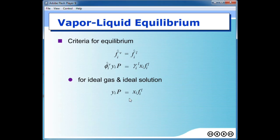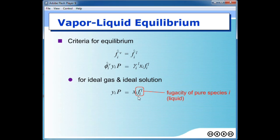So we can drop these two coefficients from the equation and get this simple equation. This simple equation can be used to calculate mole fraction in either phase if you know the mole fraction in the other phase, as long as you can calculate the fugacity of the pure species in the highlighted box. Note that the fugacity here is the fugacity of pure species i in liquid phase.